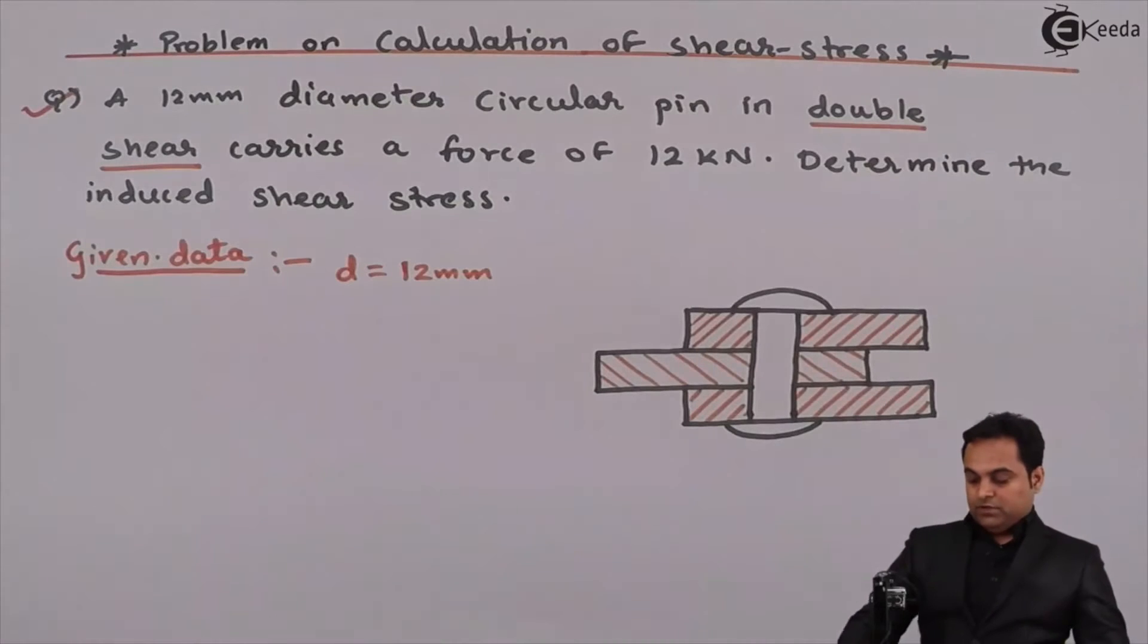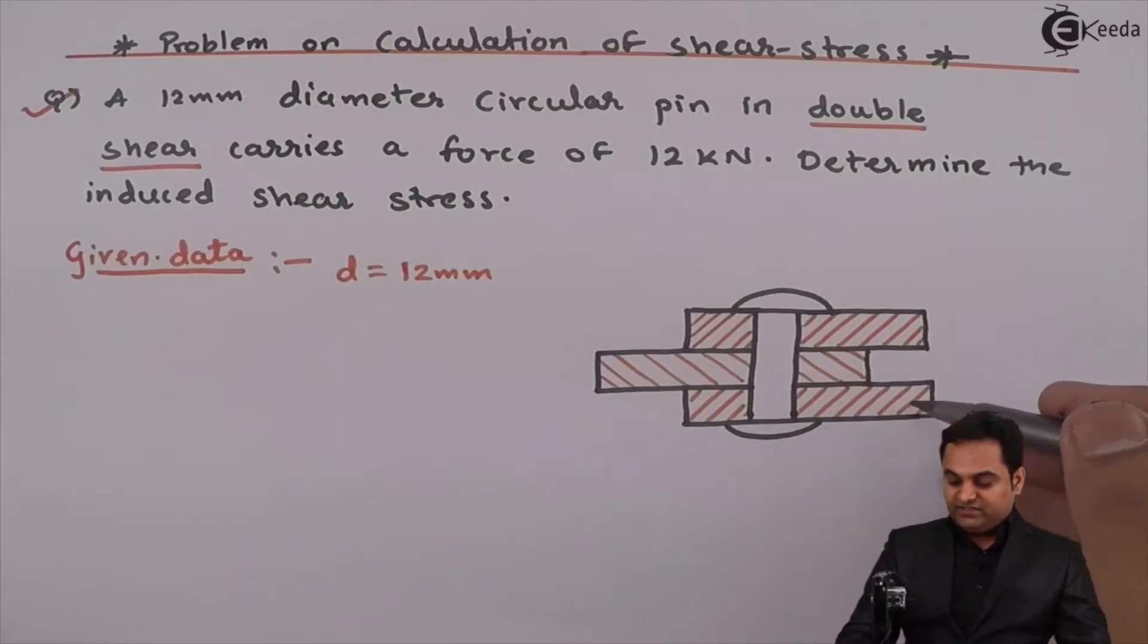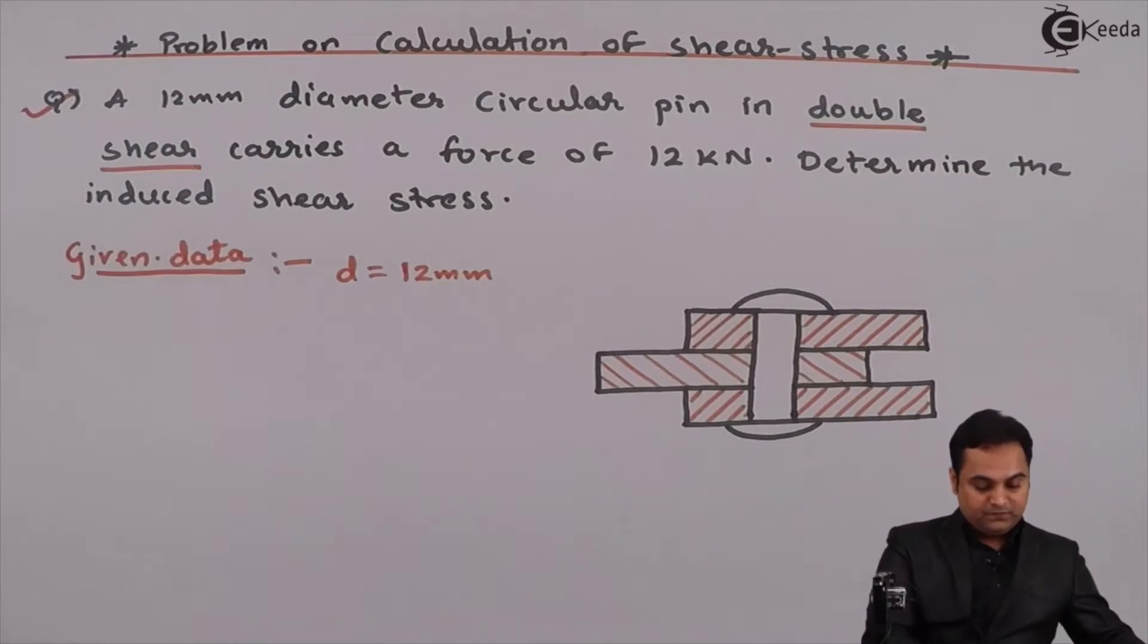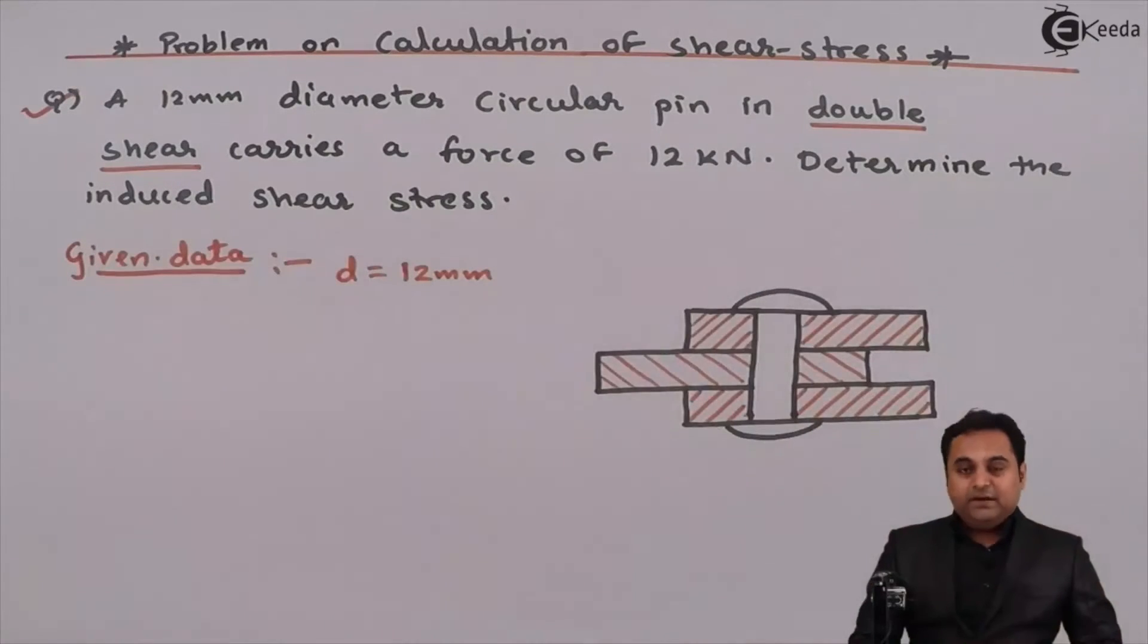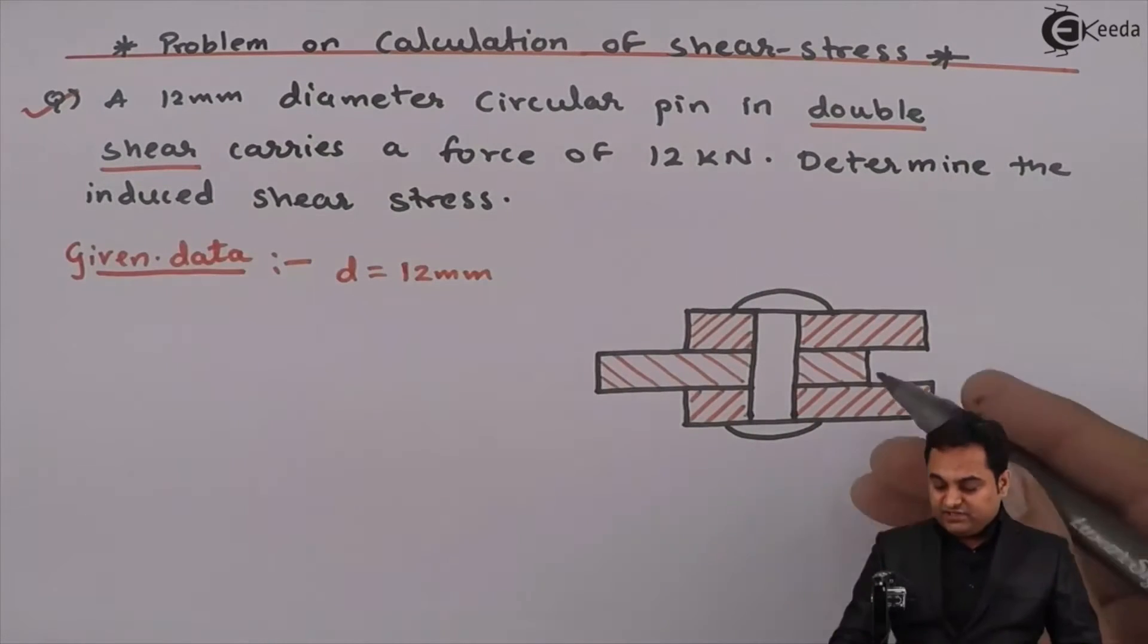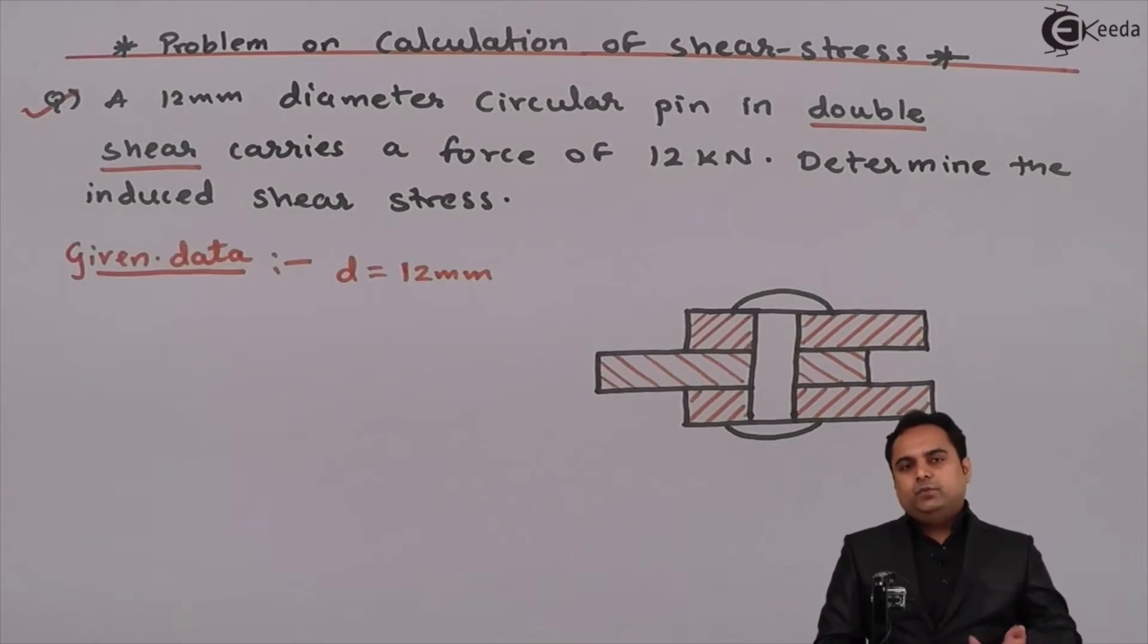Now here we have a pin which connects three plates. And since it is given that the pin is in double shear, that is why we have three plates connected. If it was single shear then it would have been only two plates which were connected.